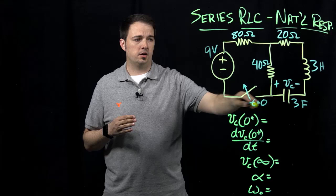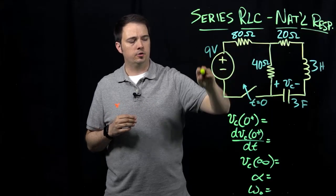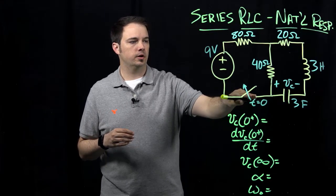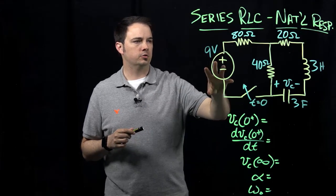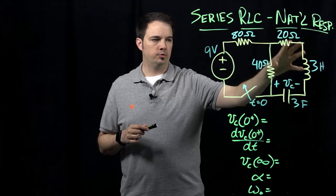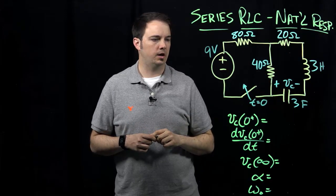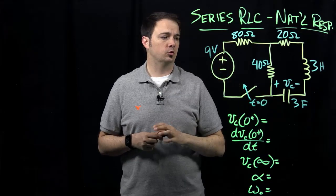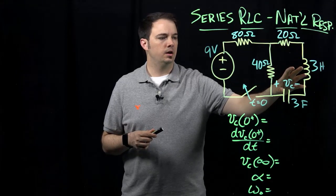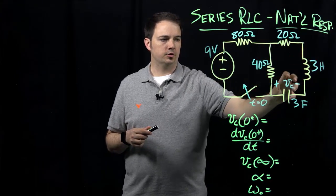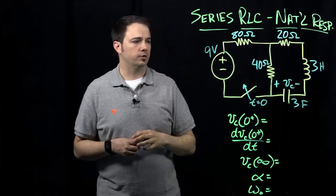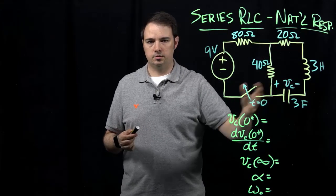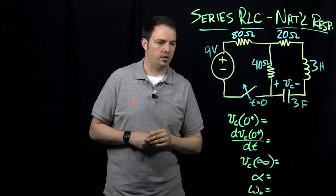What you see here in the circuit diagram — I encourage you to pause the video and copy this down in your notes — is that we have a switch that's initially closed. This 9-volt voltage source is supplying voltage and current to the resistors, inductor, and capacitor on the other side. At time T equals zero, we're going to open up this switch, thereby disconnecting the voltage source. We'll then see the natural response given by what the current through the inductor and the voltage across the capacitor are doing as a function of time as it goes out to T equals infinity, where everything relaxes back down to zero.